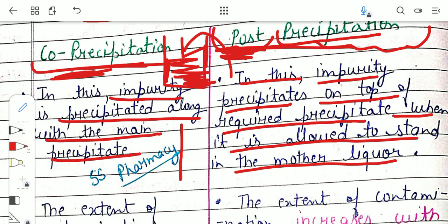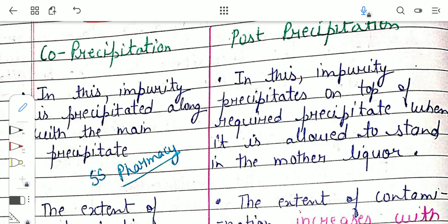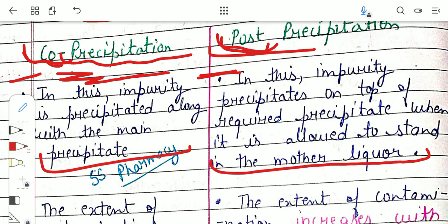You can remember this difference just by the names: 'co' usually means together, so in co-precipitation the impurity precipitates together with the main precipitate. 'Post' means after, so in post-precipitation the impurity precipitates after the main precipitate has been formed. This first point is very important — you need to explain exactly what is happening in each case.